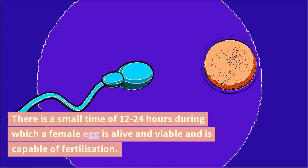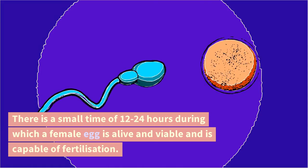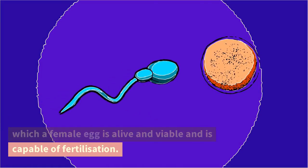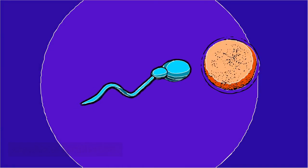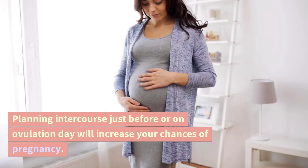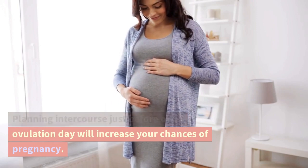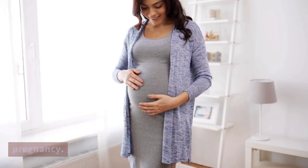How to plan intercourse during ovulation period. There is a small window of 12 to 24 hours during which a female egg is alive, viable, and capable of fertilization. Planning intercourse just before or on ovulation day will increase your chances of pregnancy.